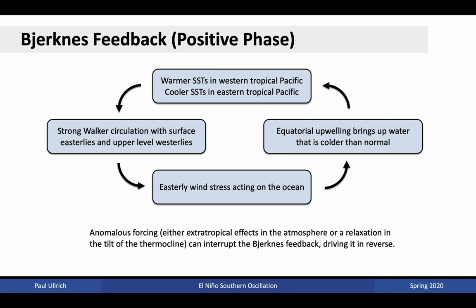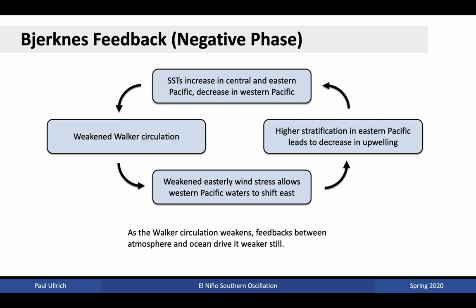This can actually result in the feedback being driven in reverse. Under the negative phase, some extratropical disturbance may result in a slightly weakened Walker circulation. If the Walker circulation is weakened, then the easterly wind stress is also weakened. This allows western Pacific waters to shift to the east, consequently moving that warm pool from the western Pacific to the central Pacific. Because of higher stratification now occurring in the eastern and central Pacific, this leads to a decrease in upwelling, which further enhances the near-surface temperatures. Thus, sea surface temperatures increase in the central and eastern Pacific and decrease in the western Pacific, thus weakening the Walker circulation further.